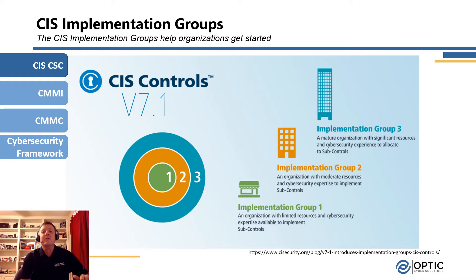I would like to talk about four of the most common ones in industry today. First is the Center for Internet Security implementation groups. CIS established the implementation groups with the rollout of version 7.1. The implementation groups are ways to help understand the CIS controls and which priority to implement them. The groups cascade from each other — implementation group one is included in implementation group two, and so forth. For organizations just starting their cyber security program and not sure where to start, the implementation groups help understand that prioritization.